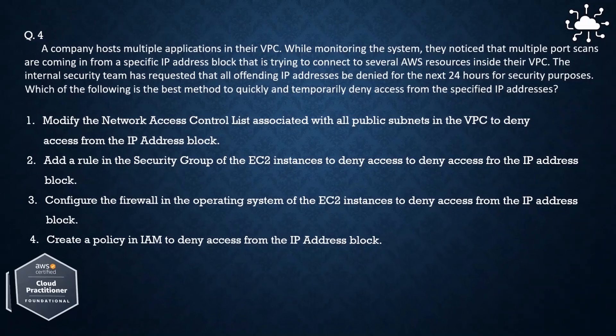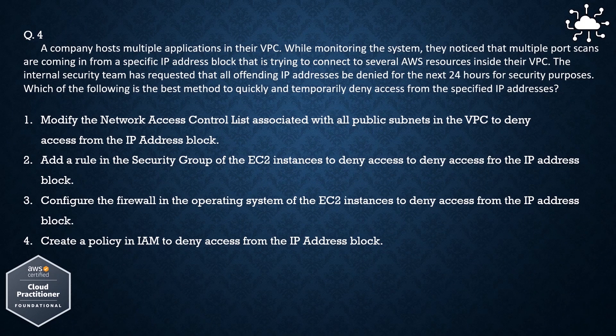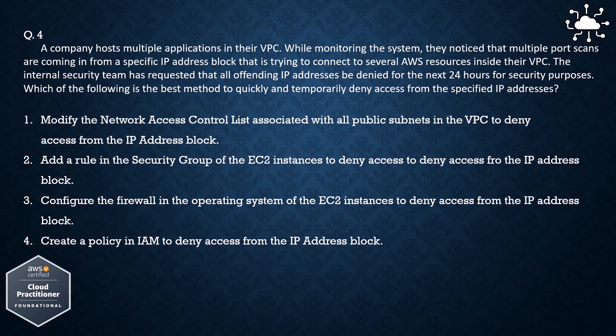Question 4. A company hosts multiple applications in their VPC. While monitoring the system, they notice that multiple port scans are coming in from a specific IP address block trying to connect to several AWS resources inside their VPC. The internal security team has requested that all offending IP addresses be denied for the next 24 hours for security purposes. Which of the following is the best method to quickly and temporarily deny access from the specified IP addresses?